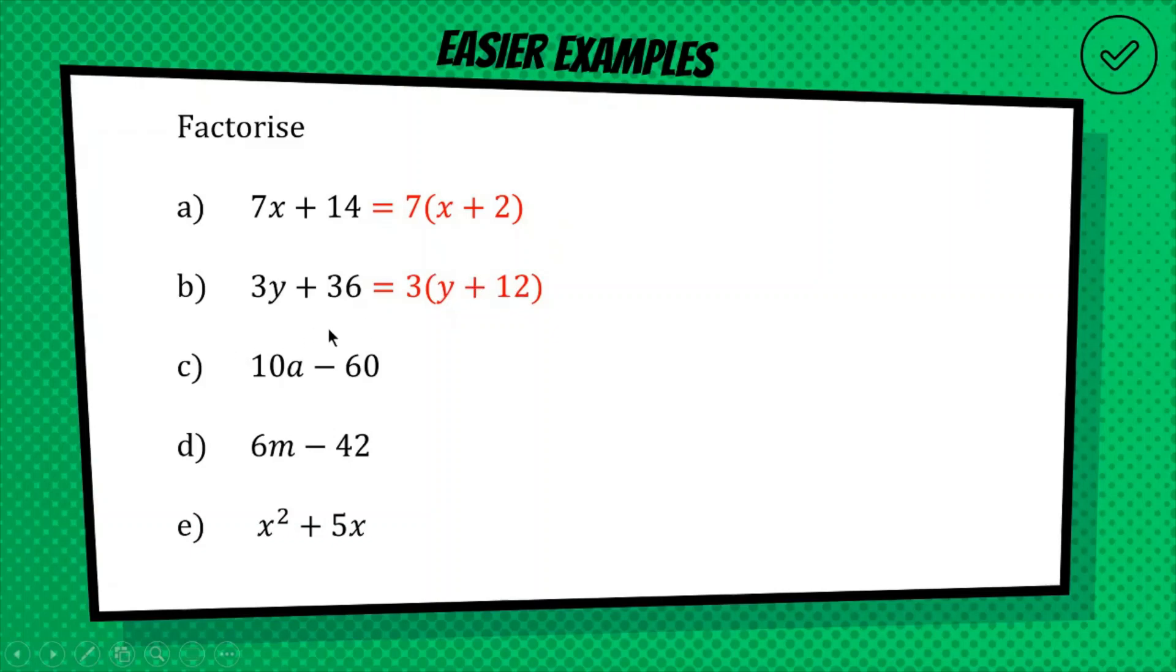Okay, next one, hopefully you can see the common factor is 10 for both of these, so we're going to do 10 out the front of a bracket. This is 10 times a, so we'll have an a here, and we've got a minus, so we'll have a minus inside our parenthesis, and this is 10 times 6, so we'll have a minus 6, and there we have it, 10 outside of a minus 6.